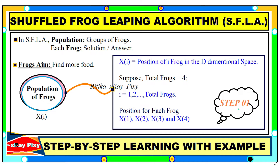The first step is the population initialization phase, where we initialize the population randomly. As this algorithm is inspired by frogs, we have a population of frogs where each frog represents a solution or answer for the given problem, and the aim for each frog is to find more food. We can represent the position of each frog in space using xi, which means the position of the i-th frog in d-dimensional space. For example, with four frogs, x1 represents the position of the first frog, x2 the second frog, and so on.